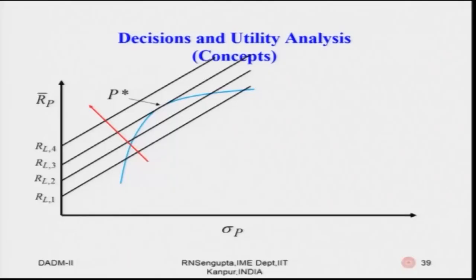Coming back to the utility concept based on the mean-variance framework for portfolios: along the y-axis you measure R̄_p, which changes depending on the weights invested in different alternatives. Along the x-axis you have σ_p. You draw the efficient frontier (the blue line). The main task is to find the P* value — the optimum portfolio — where the weights give the maximum return for a given level of risk, and the ratio of return to risk is the best.